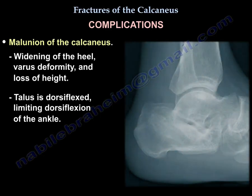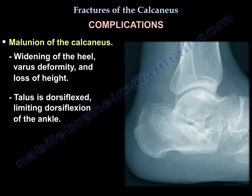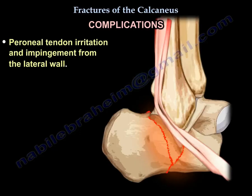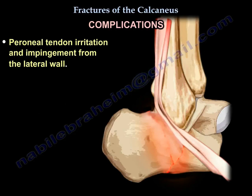Malunion of the calcaneus results in widening of the heel, varus deformity, and loss of height. The talus becomes dorsiflexed, limiting ankle dorsiflexion. Another complication is peroneal tendon irritation and impingement from the lateral wall.